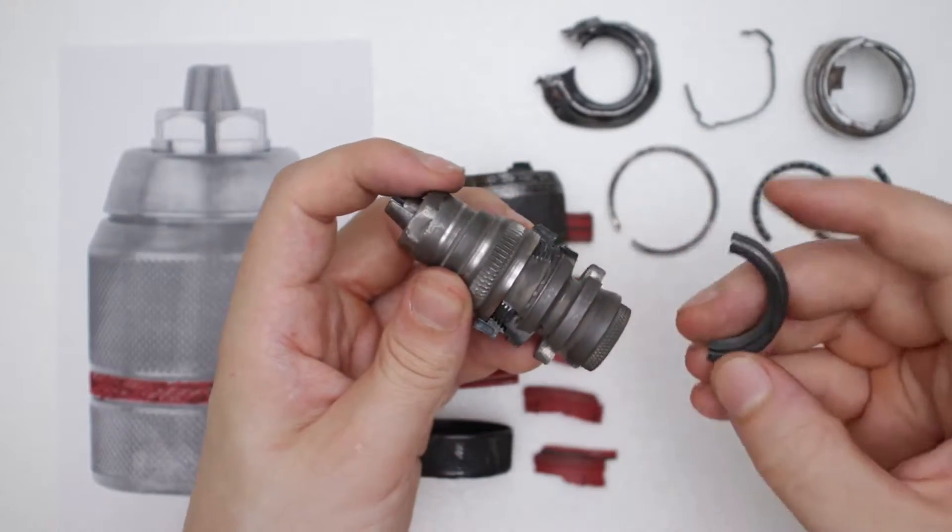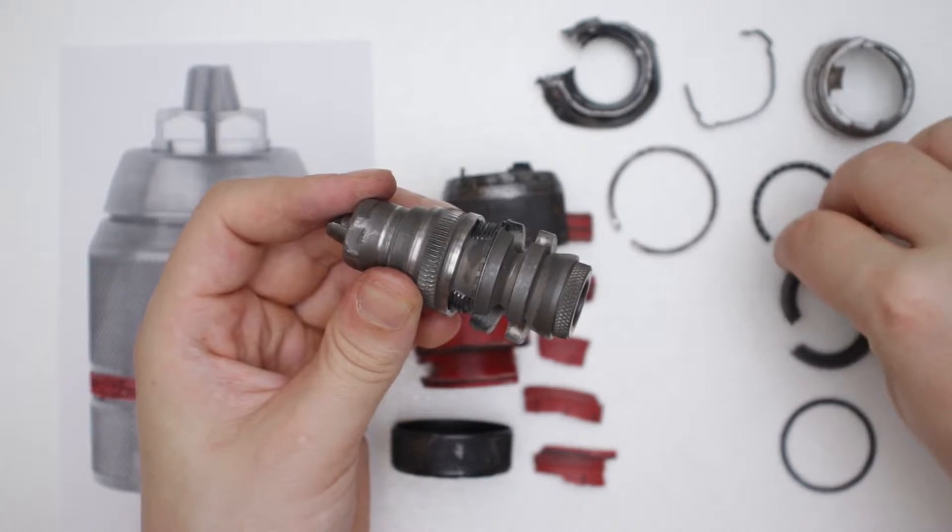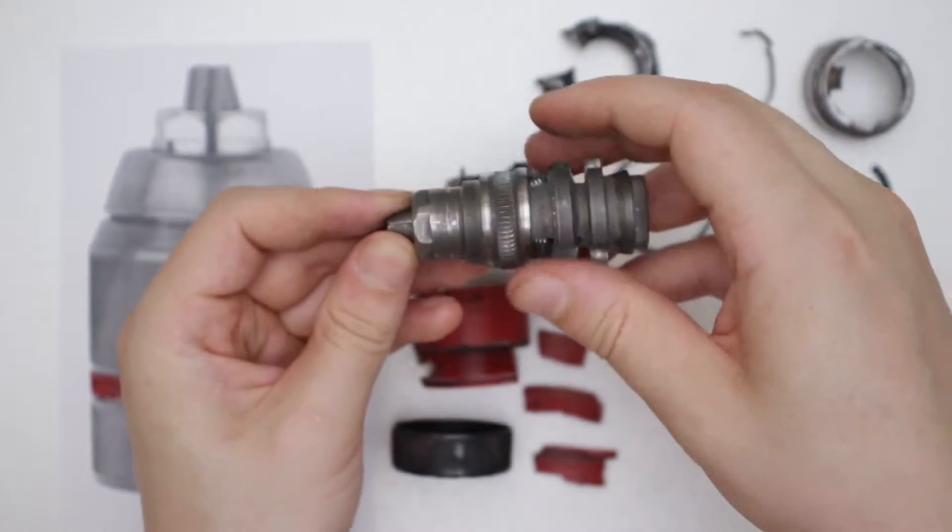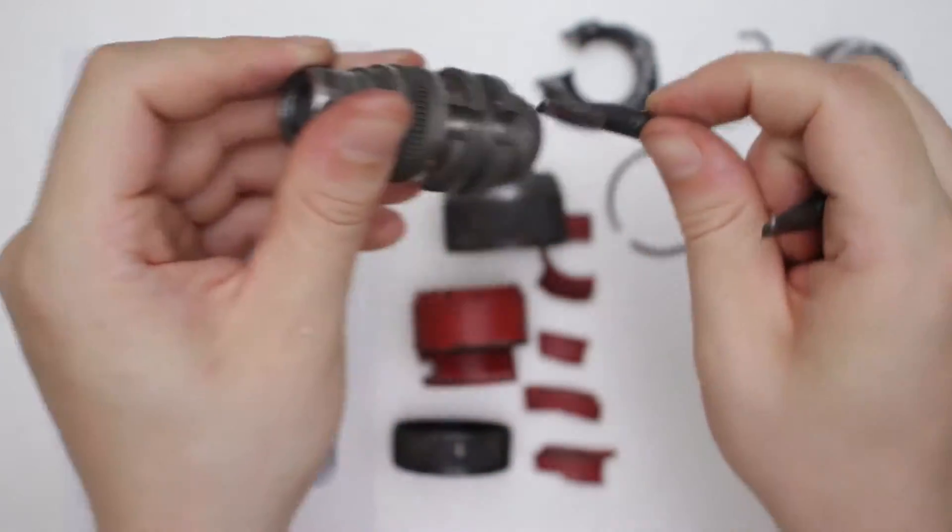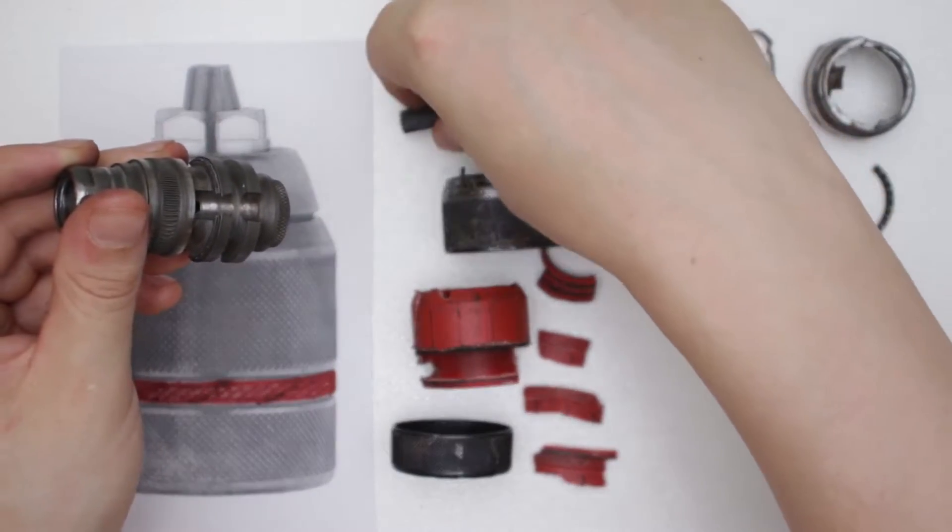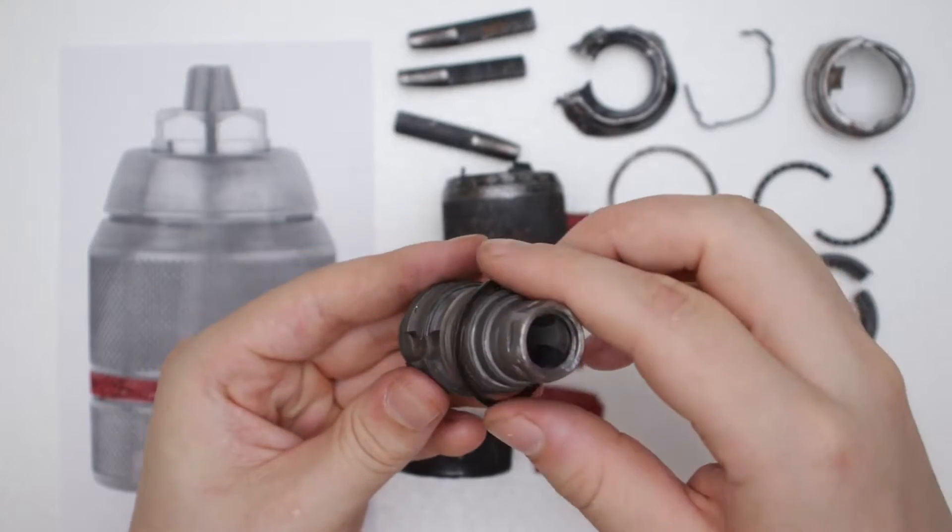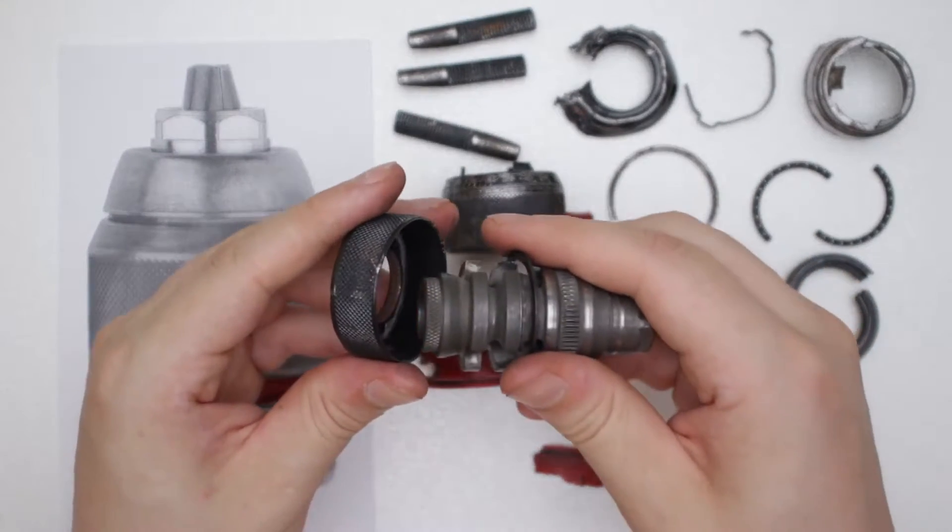So let's put the assembly groups together that are connected non-detachably later. This ring goes in here and the lower part of the grip goes on here.